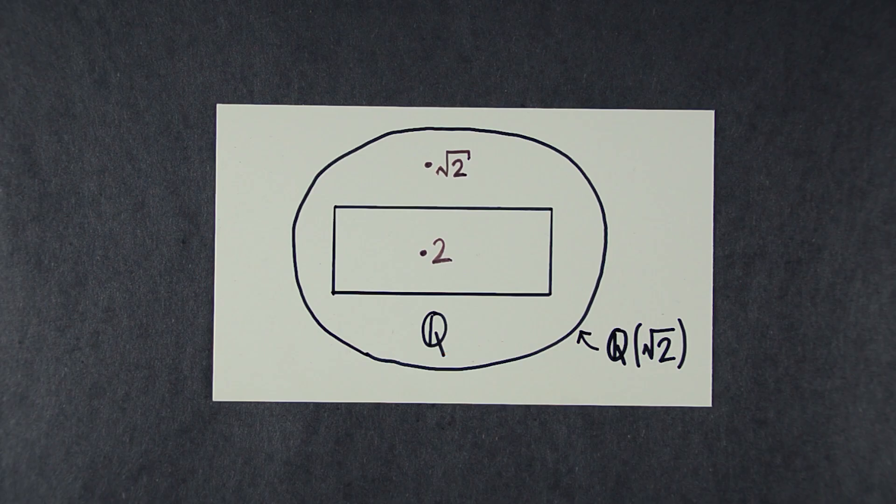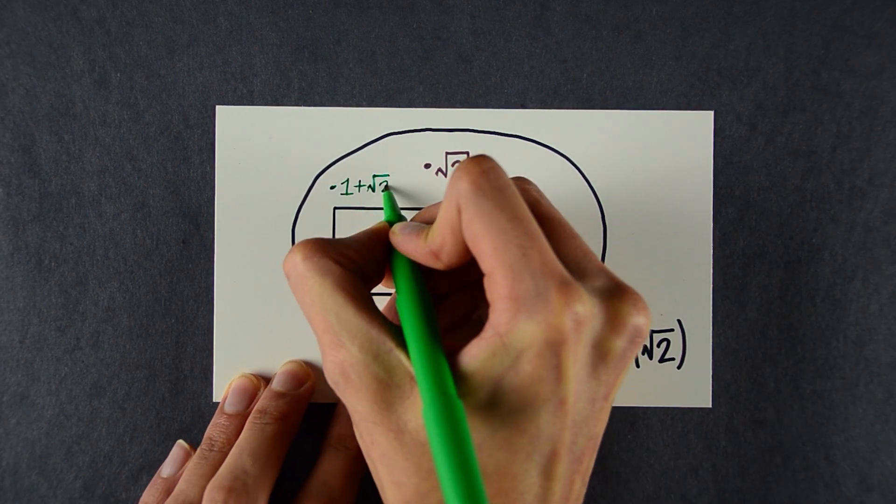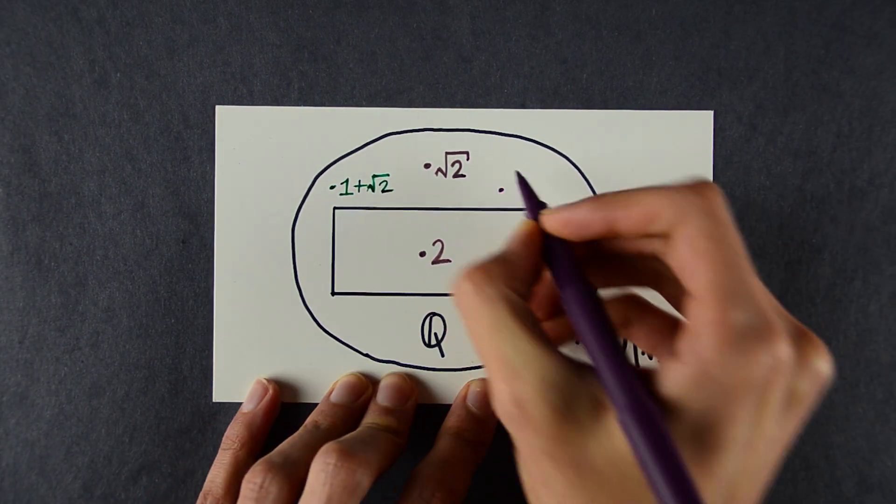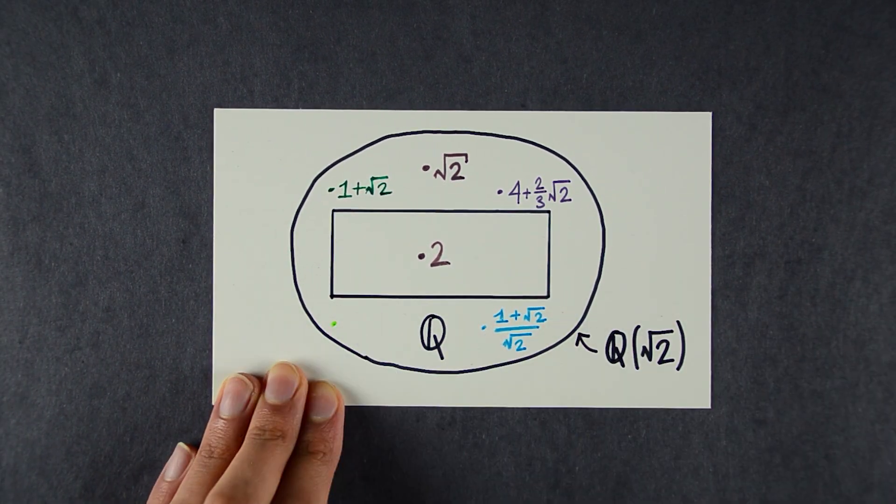That means that it's closed under the four operations. So 1 plus square root of 2 is in the field. So is 4 plus 2 thirds the square root of 2. And so on.